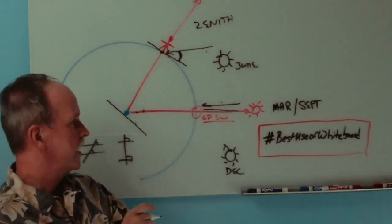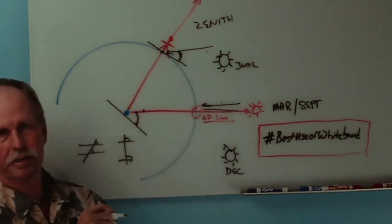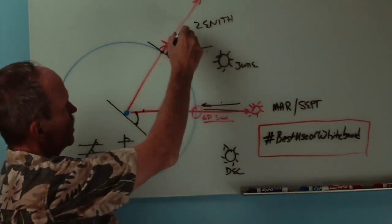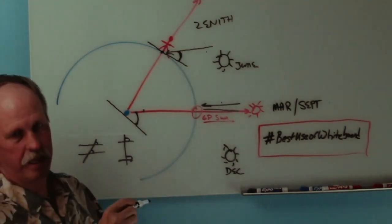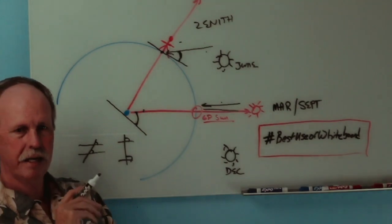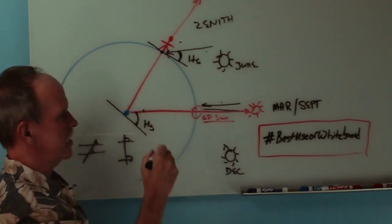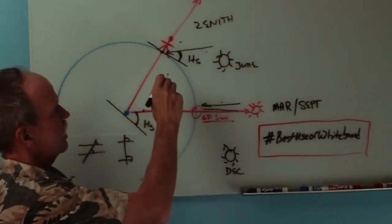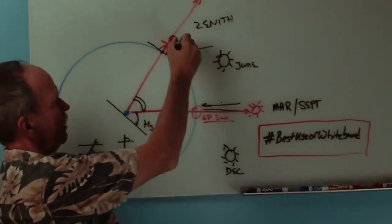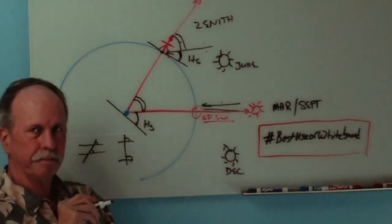So where's that angle down here? Well, it's right here. These are exactly the same angle. Now, this is a 90 degree angle to our horizontal line. So what is this angle right here? Well, it's 90 degrees minus Hs, which is the angle we measure from our sextant. If we subtract that from 90, we get that angle right there, and that would be that angle right there. That determines our latitude.